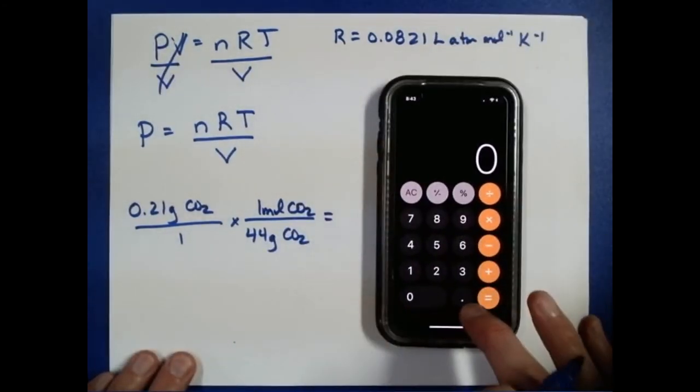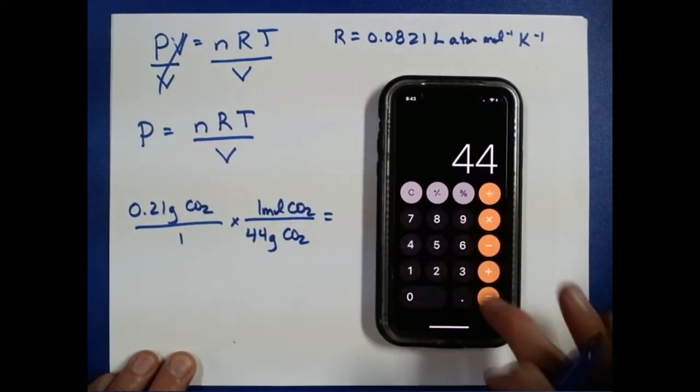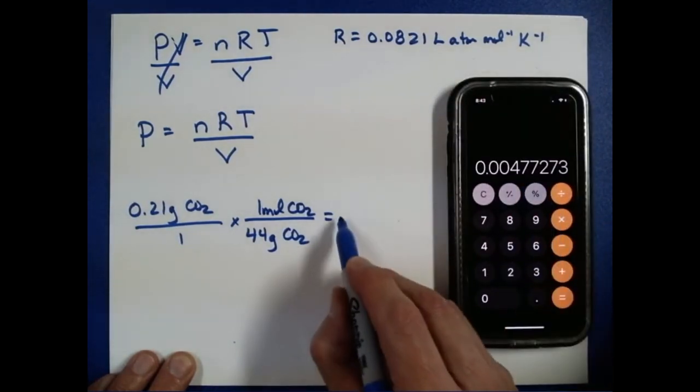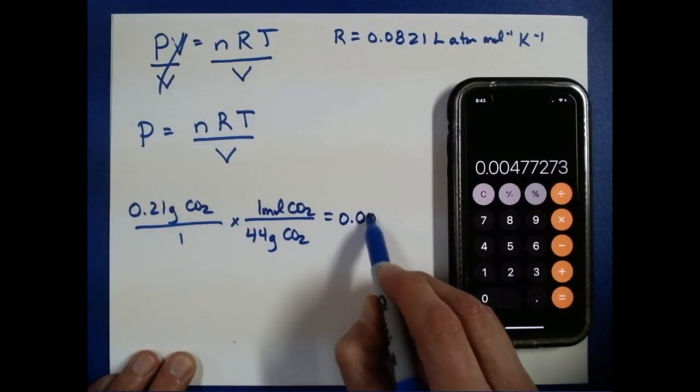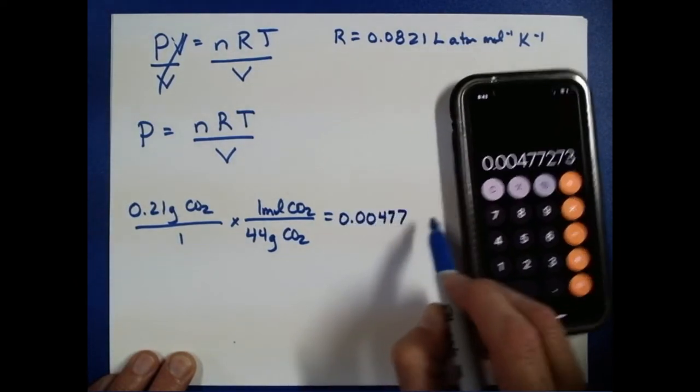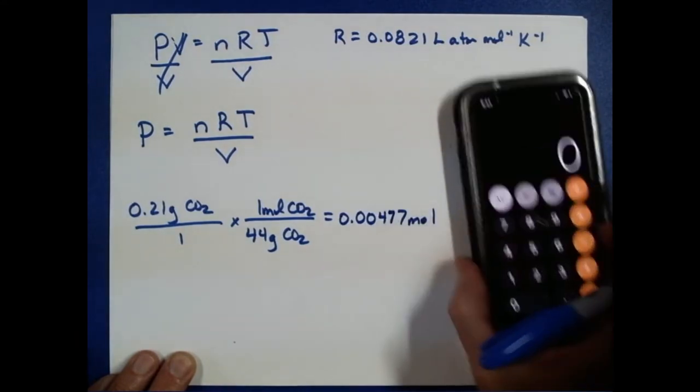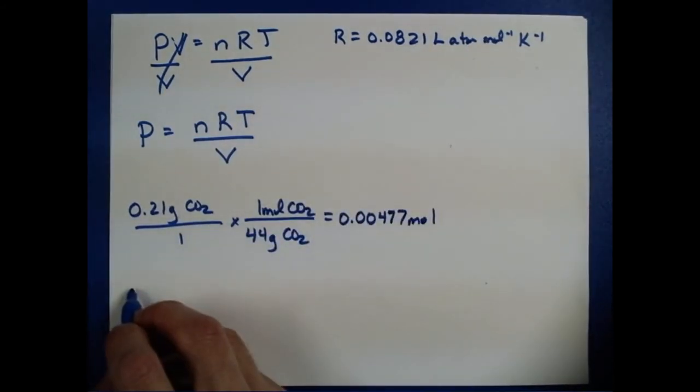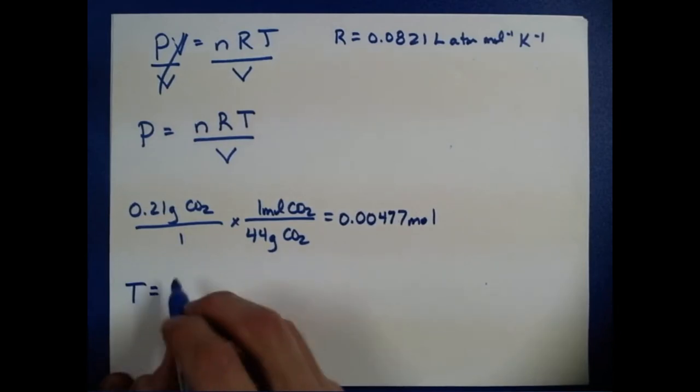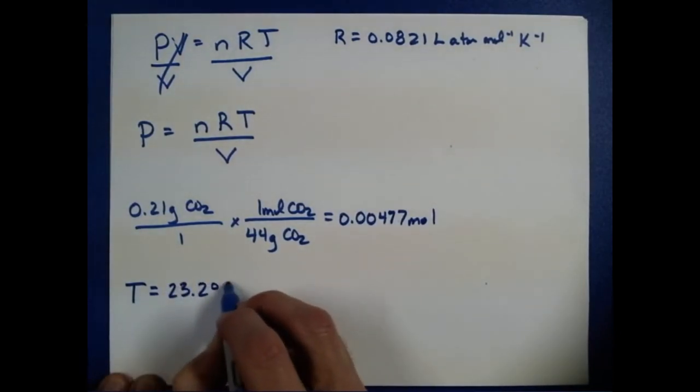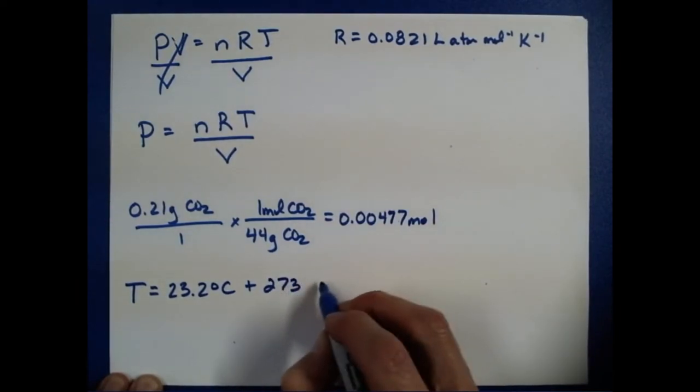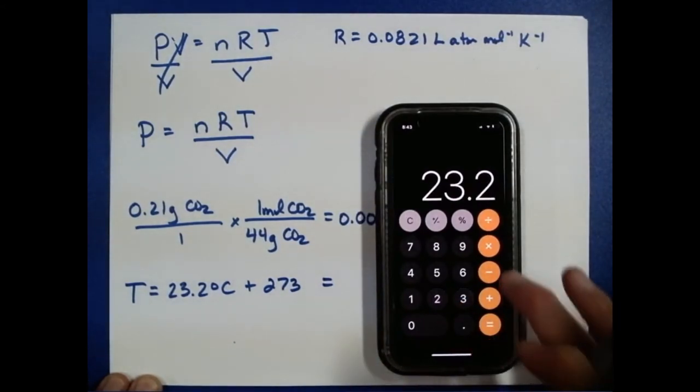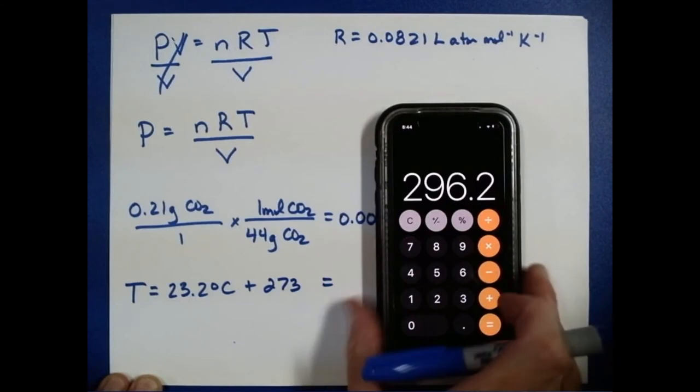So let's see, 0.21, divide that by 44, that's 0.0047, well, two sig figs, but I'm going to write down three just so I don't have a rounding error, 0.00477 moles of gas released from the headspace. So we've taken care of N, we know what R is, T needs to be in Kelvins, and we measured it as 23.2 degrees Celsius. We're going to need to add 273 to that, so we can have our units consistent. So 23.2 plus 273, that's 296.2 Kelvin.